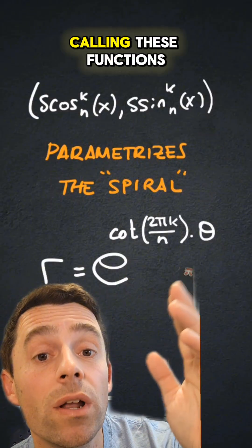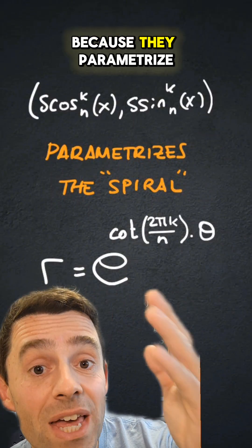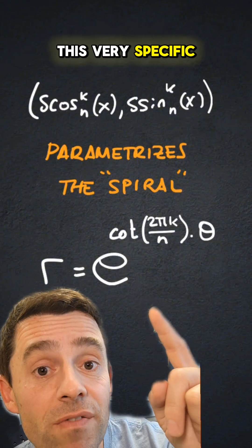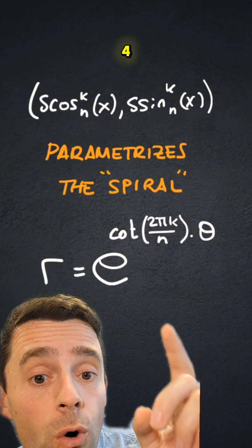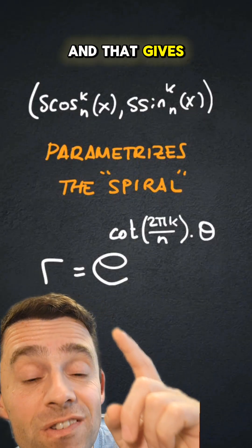And that's the reason why I'm calling these functions the spiral trigonometric functions, because they parametrize this very specific logarithmic spiral.